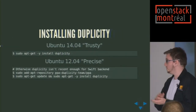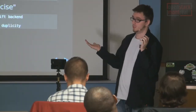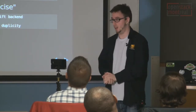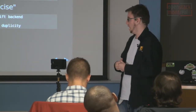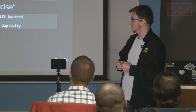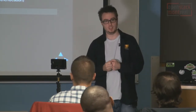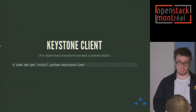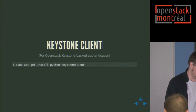Installing Duplicity — it's packaged upstream by Ubuntu. We'll talk mostly about Ubuntu with our current setups. It's packaged by Ubuntu, and if you want to have the Swift backend and you're using Ubuntu Precise, it's still maintained by the Duplicity maintainer team, but you want to have the PPA if you're using Precise. It's really easy to install. If your Swift deployment is backed by Keystone, which is the OpenStack authentication service, Duplicity doesn't install the Keystone client for you, so you need to install it either through apt or pip directly from PyPI.